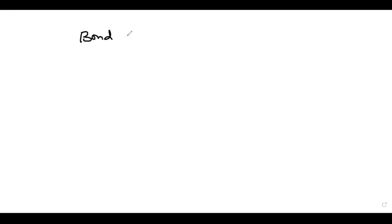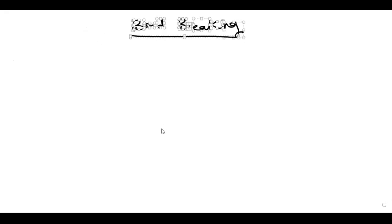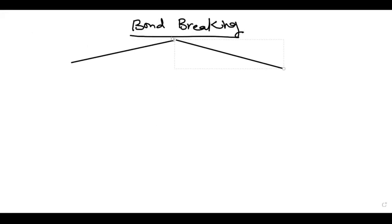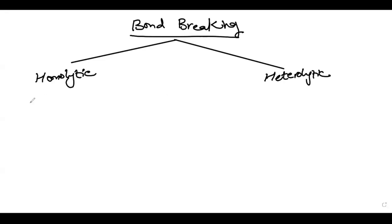Let's move to the whiteboard. When you consider bond breaking, you have two types: homolytic fission and heterolytic fission. In homolytic fission, each of the bonded atoms takes away one of its electrons from the shared pair of electrons, and this produces free radicals. So you have atom A and atom B sharing electrons — this gives A with a free radical and B with a free radical.